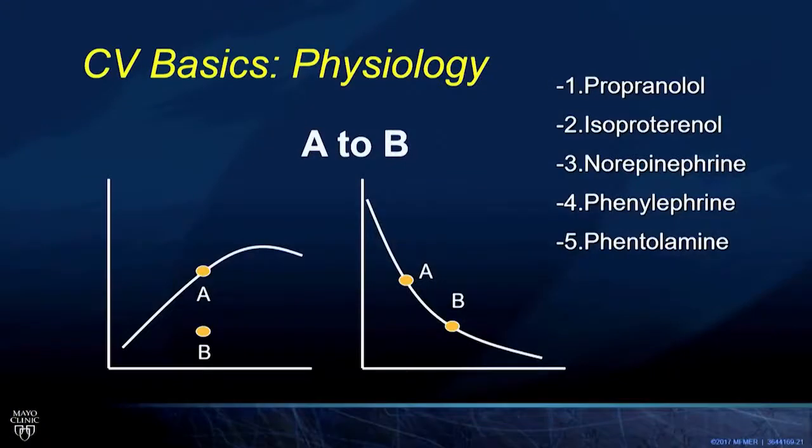We ended with this question, which you all did reasonably well on, but there were some differences of opinion. If you look at the graph on the right here, the force tension curve going from A to B, you are simply moving along the current force tension relationship, which means this is a pure change in afterload, an increase in afterload, decreasing the stroke volume.